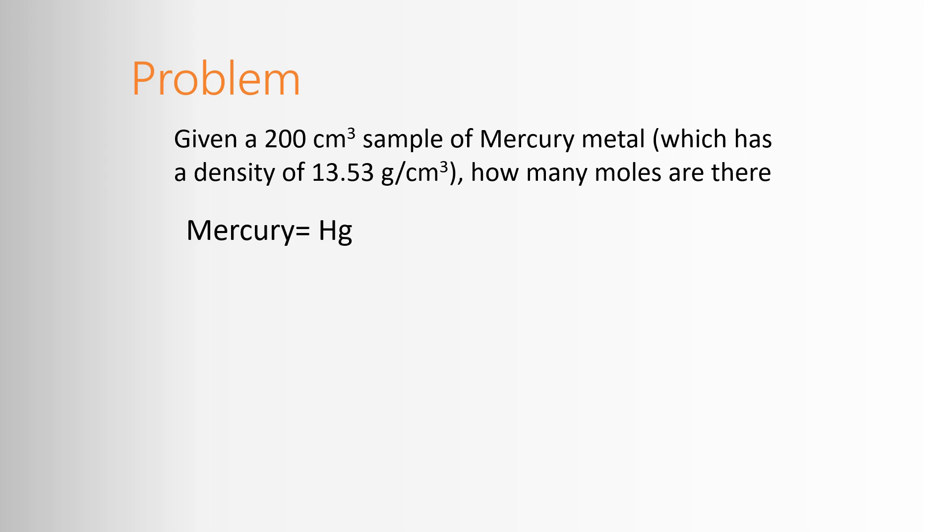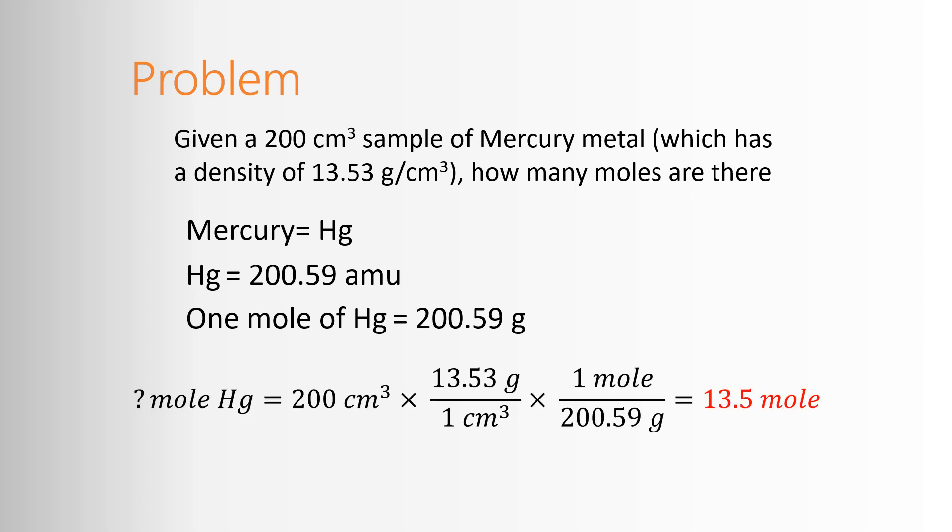I can figure out the molar mass of mercury metal from the periodic table, and convert grams to moles. Mercury is 200.59 AMUs, meaning one mole of mercury is 200.59 grams. So 200 cubic centimeters times 13.53 grams per cubic centimeter eliminates the cubic centimeters and puts me in grams. I'm then going to multiply by one mole over 200.59 grams. The grams cancel. 200 times 13.53 divided by 200.59, I get 13.5 moles.